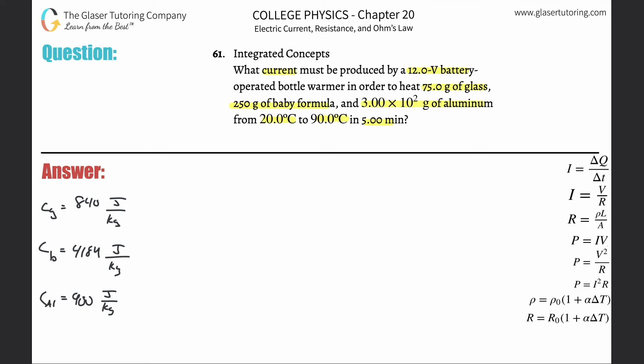All right, let's run through it. What current must be produced by this battery? We know it takes energy in order to heat things up, so I'm thinking about current, voltage, and energy. How are they related? They're related through the power formula: power is equal to the current supplied multiplied by the voltage. Remember power from way back when is simply energy per time.